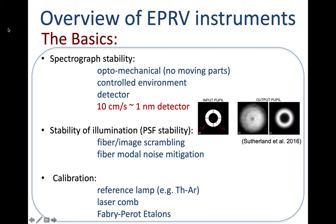Once we are done stabilizing the instrument and the illumination pattern to minimize instrumental noise, we still need a very good wavelength calibration for our spectra, which is of course a crucial component. This has been done typically with a reference lamp in a stable spectrograph, like a standard thorium-argon lamp, but nowadays we also use laser frequency combs, which are an expensive solution, and more and more popular are Fabry-Pérot etalons that provide a stable wavelength reference.